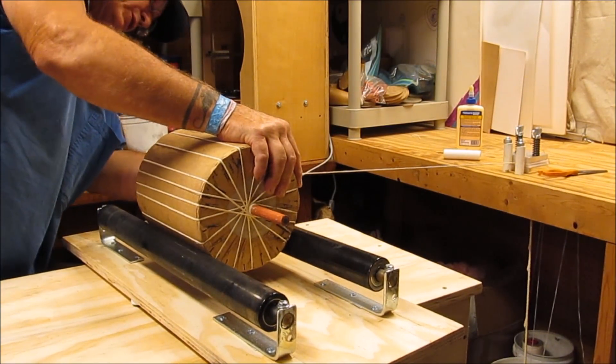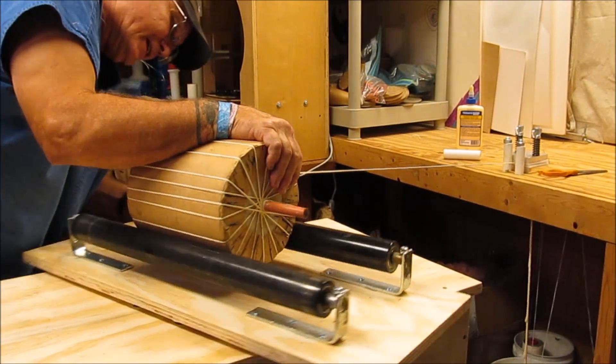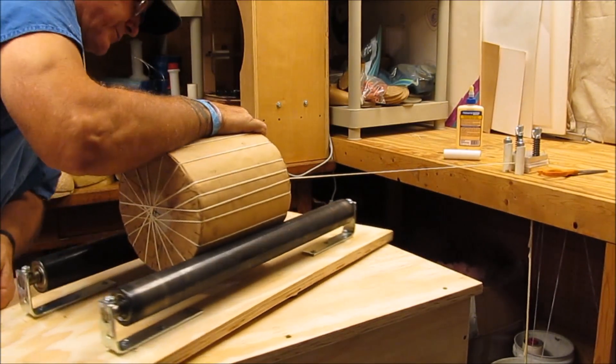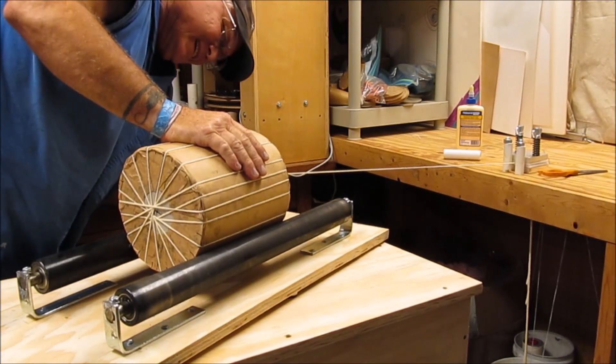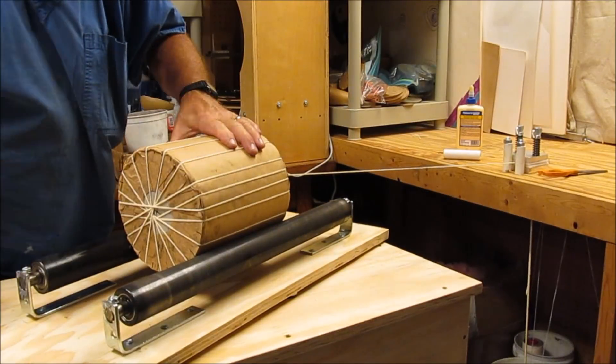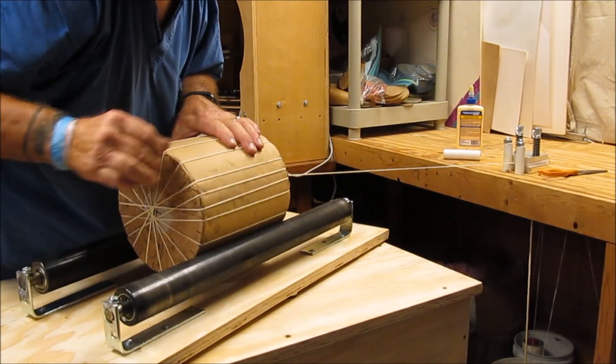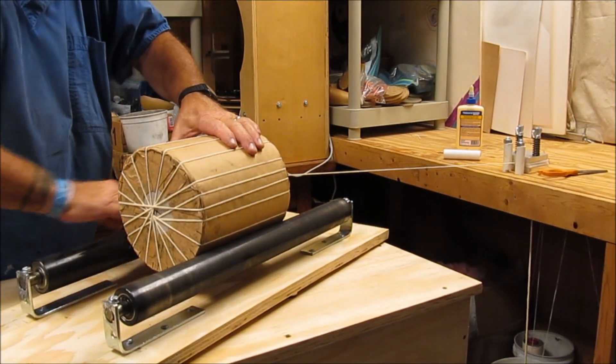I have found that when a little glue actually gets on the rollers, it keeps the shell from sliding as much. So one trick I may do in the future is actually smear a little glue on the rollers before I even start spiking.